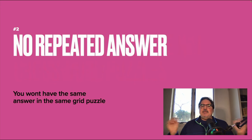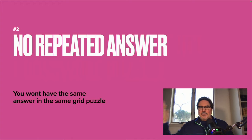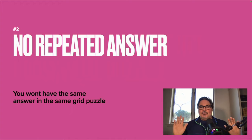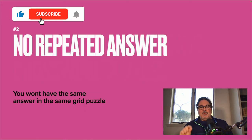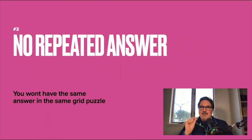Number two: no repeated answer. I've seen this in puzzles where it'll say something like 'kind of something,' and then later on the exact same clue appears again. I can assure you there is never a repeated answer. If one clue was 'something sweet' and you put sugar, and then later there's a clue like 'nickname for your girlfriend,' it would not be the same answer. They do not repeat answers in the grid.